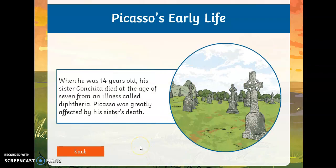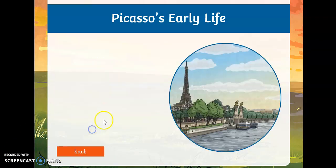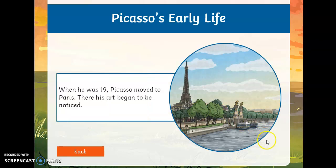Picasso was very, very heavily influenced by the death of his sister, Conchita, who died when he was 14 — she was only seven years old. His little sister died from a disease called diphtheria, and he was greatly affected by her death for his whole life. When he was 19, after studying art in Spain, Picasso moved to Paris, where he really started to blossom as an artist and began to become noticed.